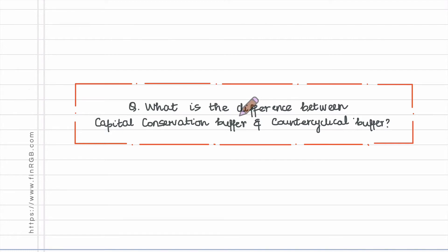In this video let us take a look at the difference between two types of buffers which were introduced as part of the Basel III accord. These buffers are number one the capital conservation buffer and number two the counter cyclical buffer.